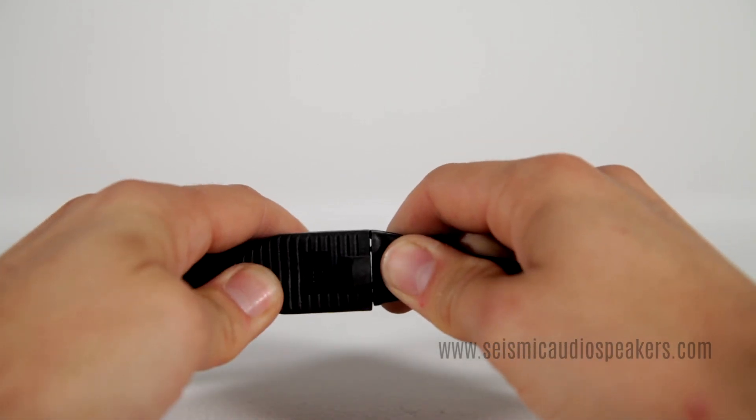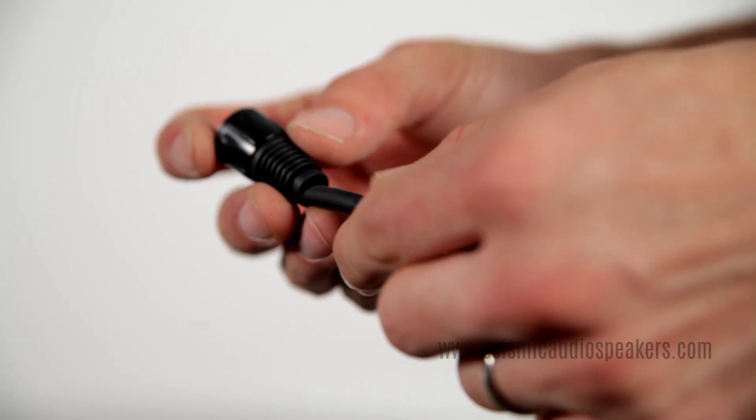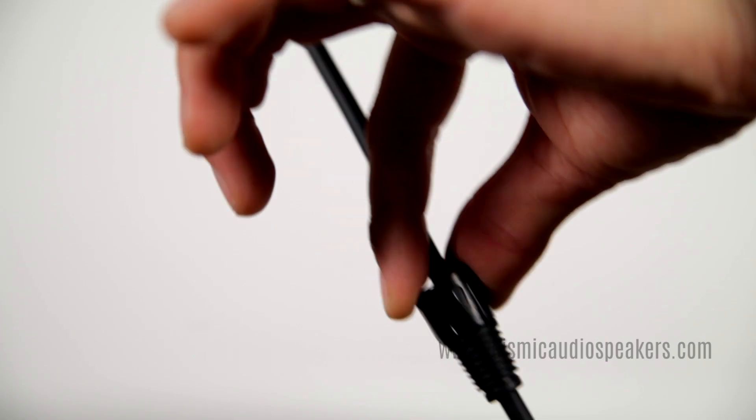Start by plugging in the soldering iron. Unscrew the XLR connector and slip the outer cover and strain relief down the wire, making sure it's pointed the right way.